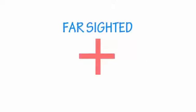The plus sign means you're farsighted and the negative sign means you're nearsighted. So SPH means spherical error. Plus sign means you're farsighted and negative sign means you're nearsighted.